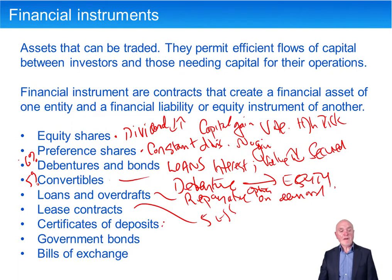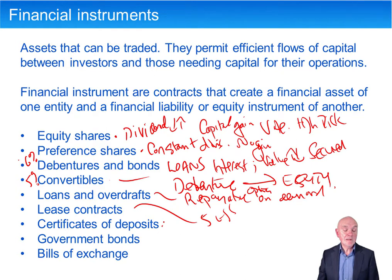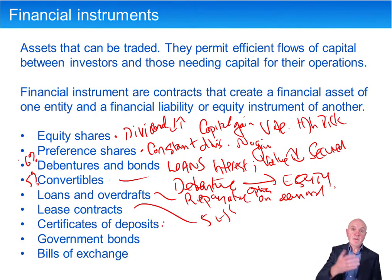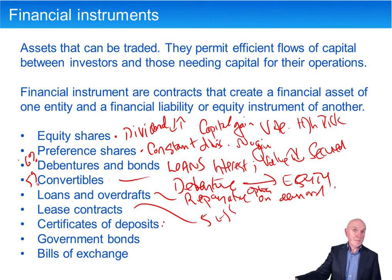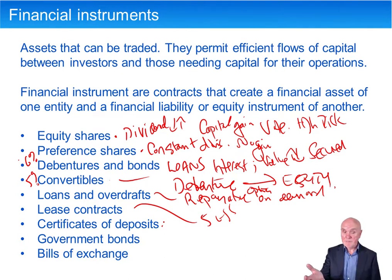Certificates of deposit are for when you have surplus cash. A certificate of deposit means you put money with the bank and get a certificate saying, for example, this person has deposited $100,000 in the bank for three months at a rate of interest of 5% per annum.